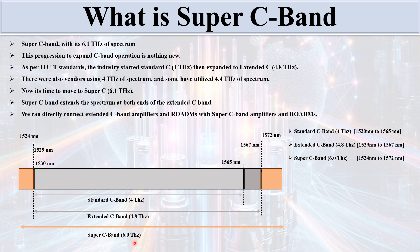We can directly connect extended C band amplifiers and ROADMs with Super C band amplifiers and ROADMs. Using the Super C band gives us 27 percent more fiber spectrum than the extended C band.